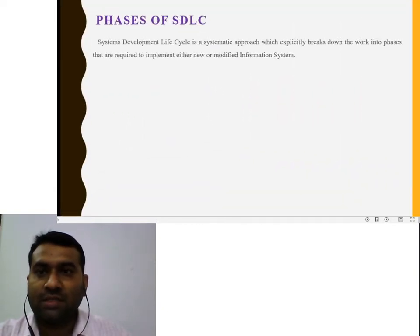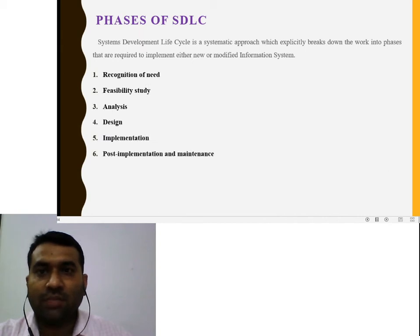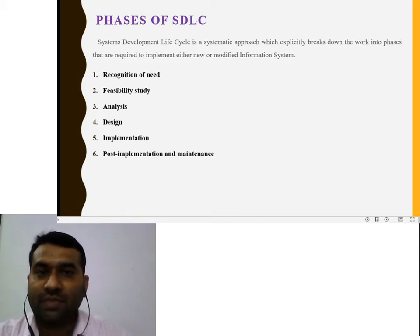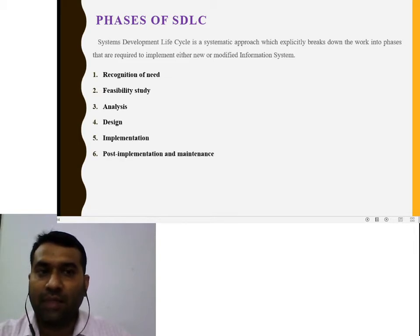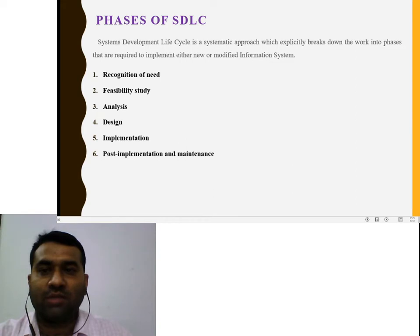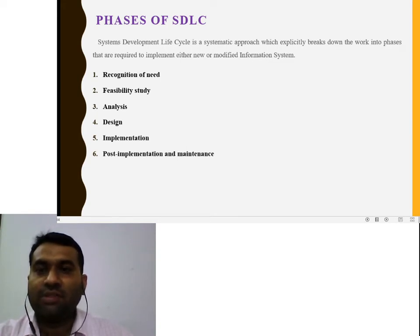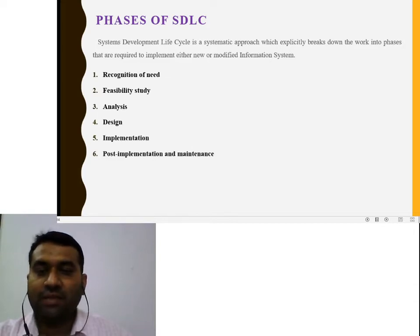The phases of the system development life cycle represent a systematic approach which explicitly breaks down the work into phases. The work breaks into various types of phases required to implement either a new or modified information system. The phases are: recognition of needs, feasibility study, analysis, design, implementation, post-implementation, and maintenance.